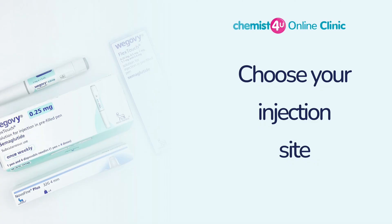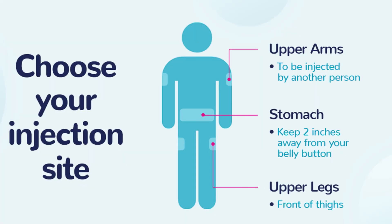You can inject Wegovy in your upper arm, stomach, or thigh. If you inject in your stomach, keep it two inches away from your belly button. You can inject in the same part of your body each week, but make sure it is not the exact same spot each time. Don't inject in an area where the skin is tender, bruised, red, warm, or hard, or areas with scars or stretch marks.